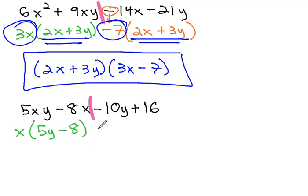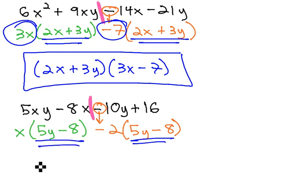On the right side, the GCF is negative 2, using that sign that starts the first term. Factoring out the negative 2 leaves 5y minus 8, being careful with our signs. Again, we have the matching GCF binomial, 5y minus 8, and the other factor is x minus 2. That's factoring by grouping.